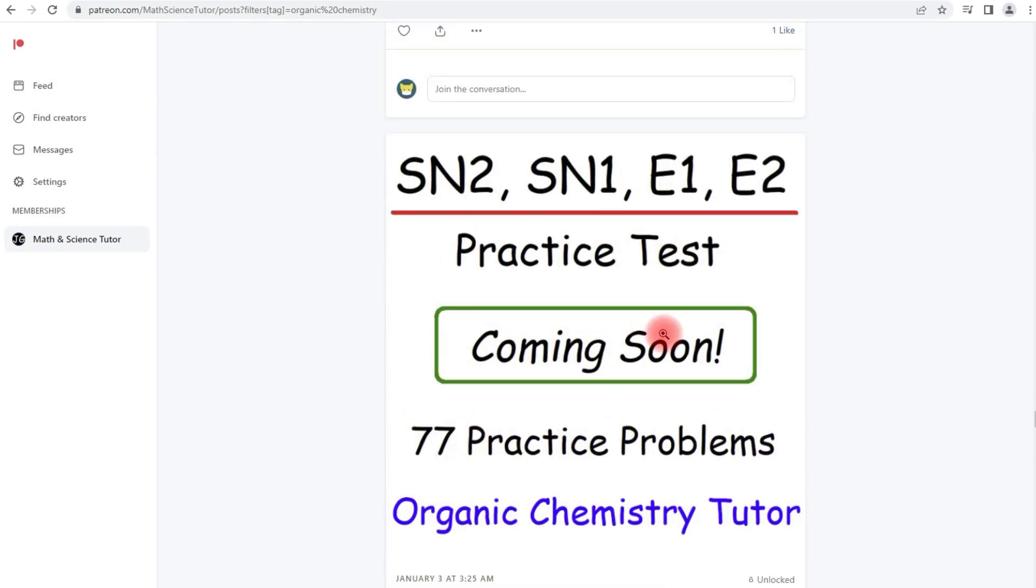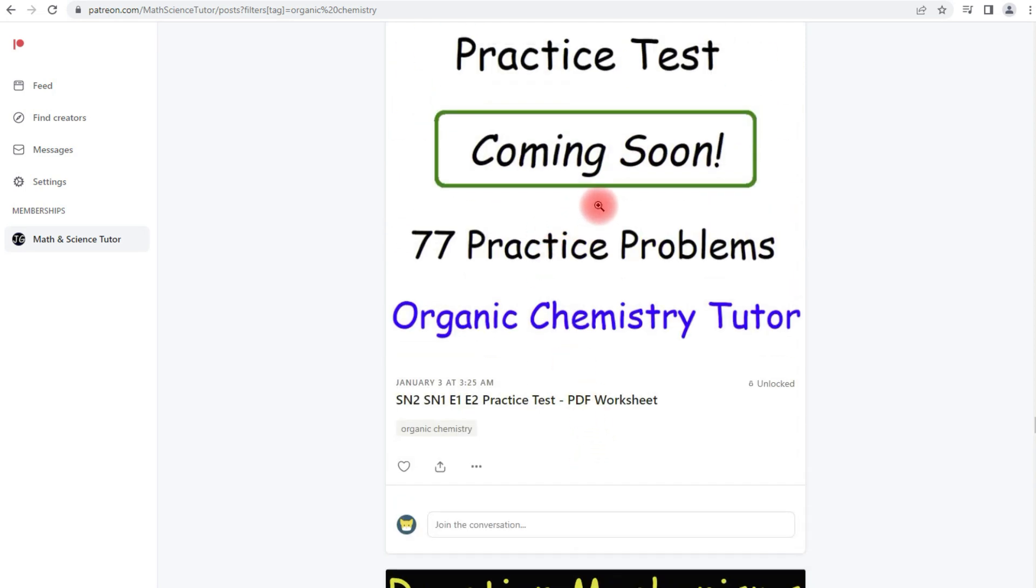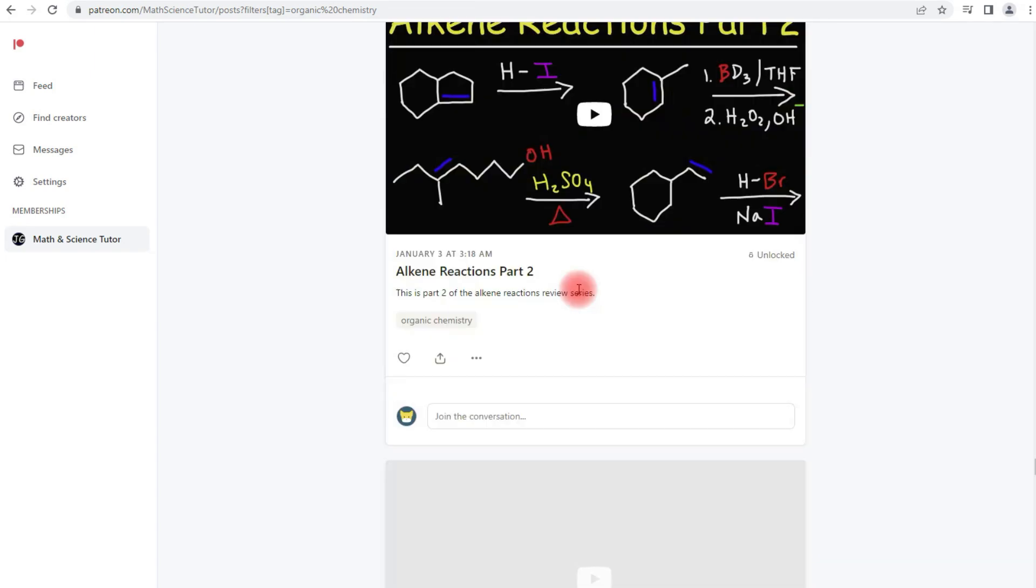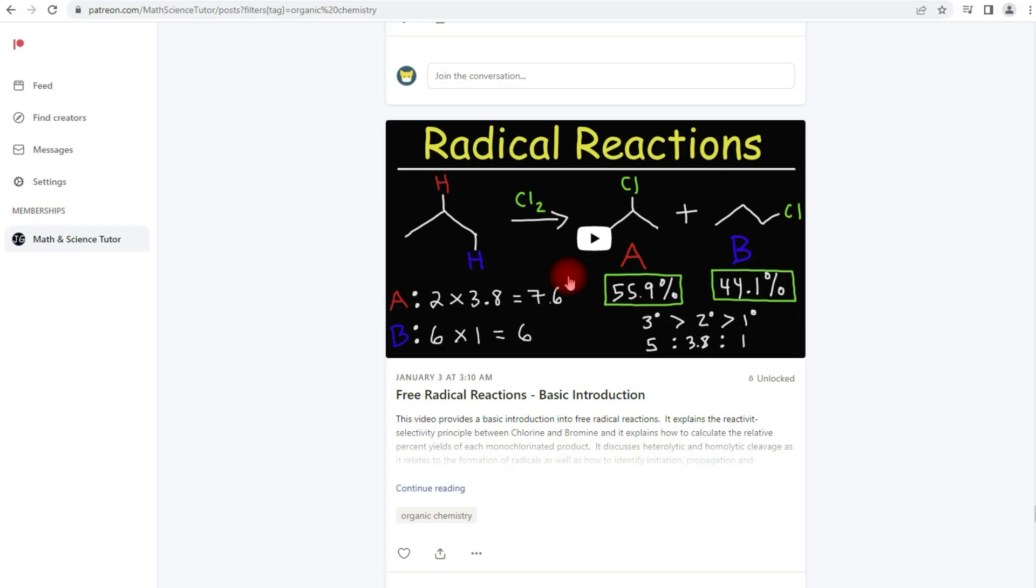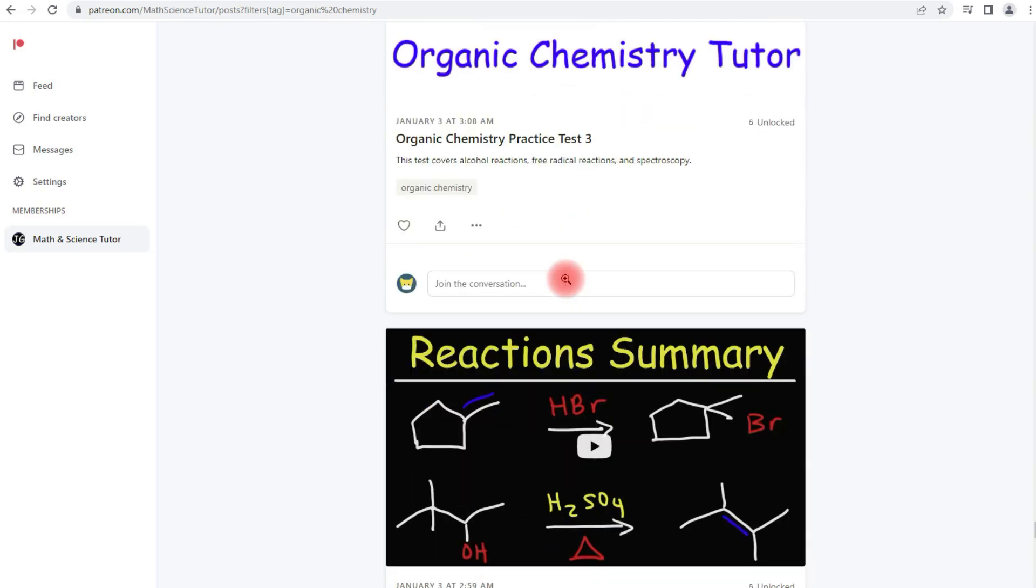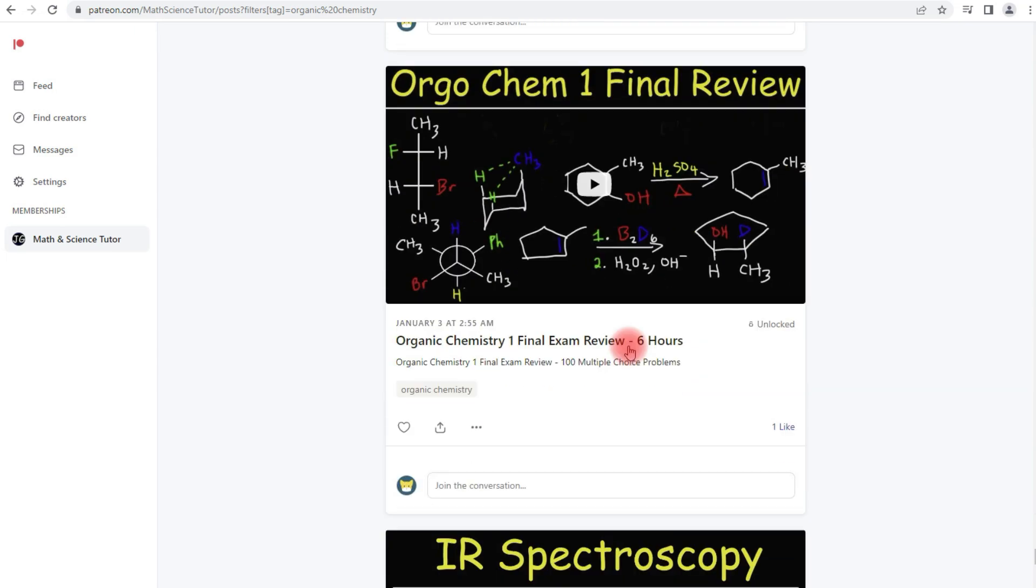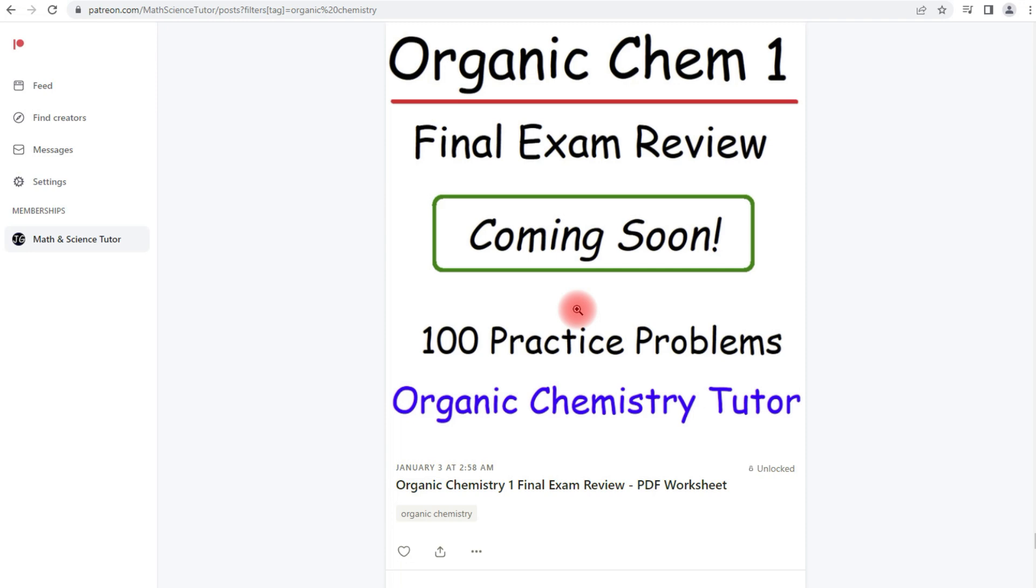And then there's a practice test coming up with 77 practice problems. The video for that is completed but I haven't started the worksheet yet, so that's coming up soon. Then we have alkene reactions, alkyne reactions, alcohol radical reactions, and the organic chemistry 1 final exam review. The video is completed but I haven't gotten to the worksheet yet. So feel free to take a look at this when you get a chance and let's get back to the video.